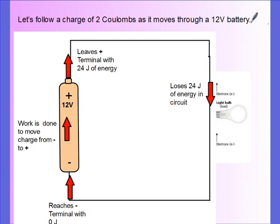Now what we're going to do is we're going to follow two coulombs of charge as it moves through a 12 volt battery. Let's start right here. Let's say it starts at 0 volts. The battery does work to move charges from the negative to the positive terminal. So when it leaves the battery it has 24 joules worth of energy because we're doing two coulombs.